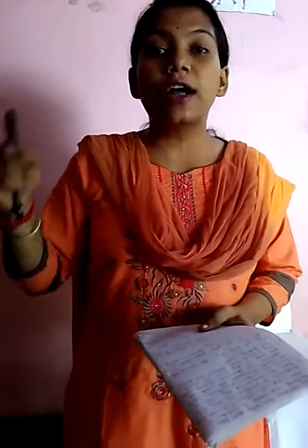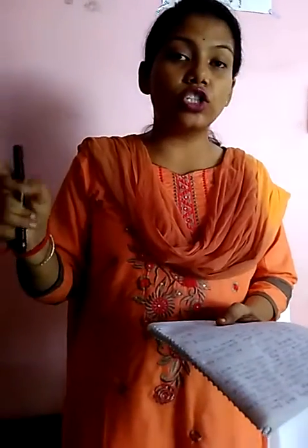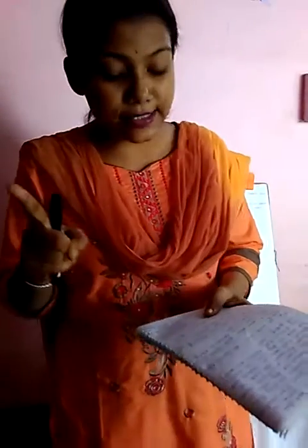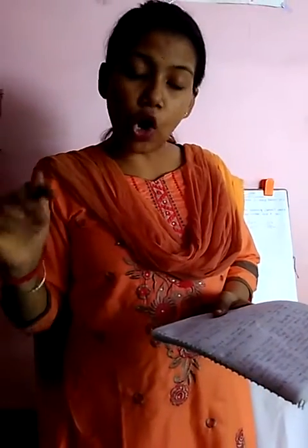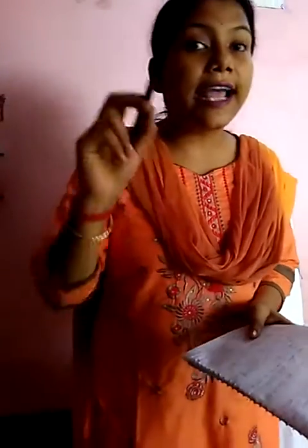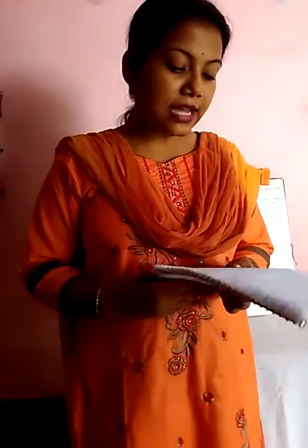Number 1 is winter clothes, so write W. Number 2 is summer clothes, so S. Number 3 is W. Number 4 is also W — winter clothes. Number 5 is rainy season clothes — this is gumboot, so R. Number 6 is summer clothes — cotton shirt. Number 7 is also winter clothes. And number 8 is summer clothes.